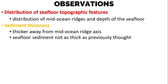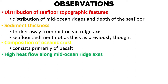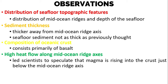Next we have the composition of oceanic crust. Researchers noticed that the oceanic crust primarily consists of basalt rocks. Another observation is that there is high heat flow along the mid-ocean ridge axis. This led scientists to speculate that magma is rising into the crust just below the mid-ocean ridge axis.